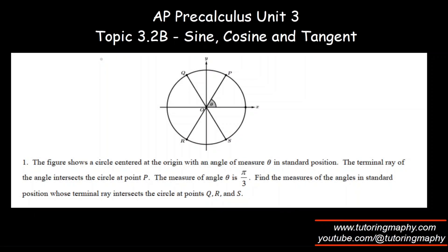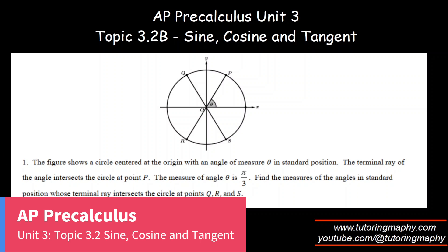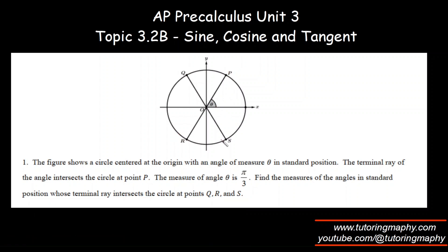This is the next part of the same topic 3.2, sine cosine and tangent, unit 3. We are given a circle centered at the origin and an angle theta formed with the terminal ray that intersects at P. Other points are given: Q, R, and S. If theta is π/3, what is the measure of the terminal ray that intersects the circle at Q, R, and S — in other words, we need these angles: this one, this one, and this one.